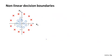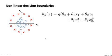Let's now look at a more complex example where I have crosses to denote positive examples and O's to denote negative examples. Given a training set like this, how can I get logistic regression to fit this sort of data? Earlier, when we were talking about polynomial regression or linear regression, we talked about how we can add extra higher-order polynomial terms to the features, and we can do the same for logistic regression. Concretely, let's say my hypothesis includes two extra features, x1 squared and x2 squared, so that I now have five parameters theta 0 through theta 4.